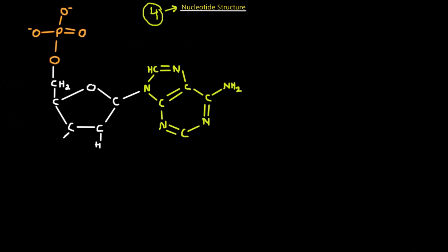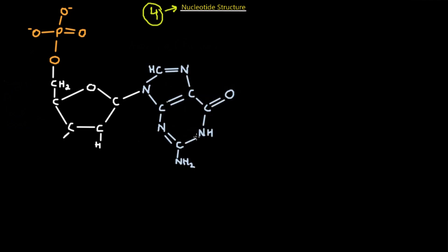Looking at the next nitrogenous base, this one is guanine. Guanine is also a purine because, as you can see, it also has two rings to its nitrogenous base. So adenine and guanine are both purines.